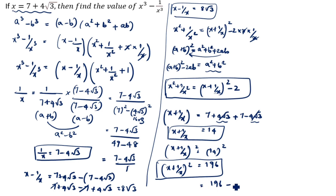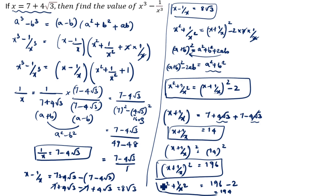Substituting: x square plus 1 by x square equals 196 minus 2 equals 194. So the value of x square plus 1 by x square is 194.